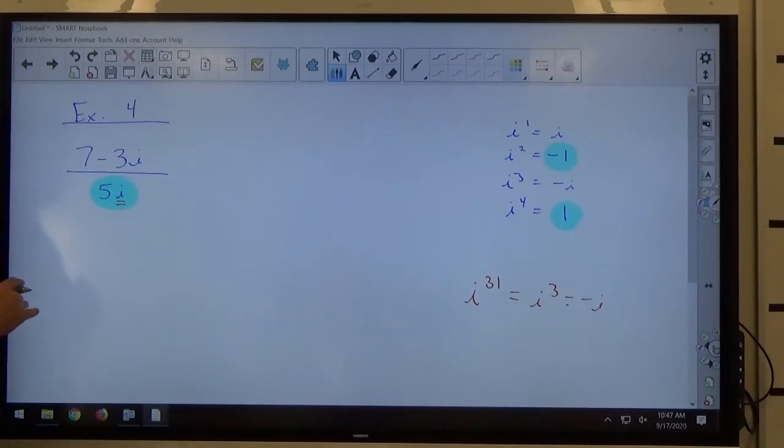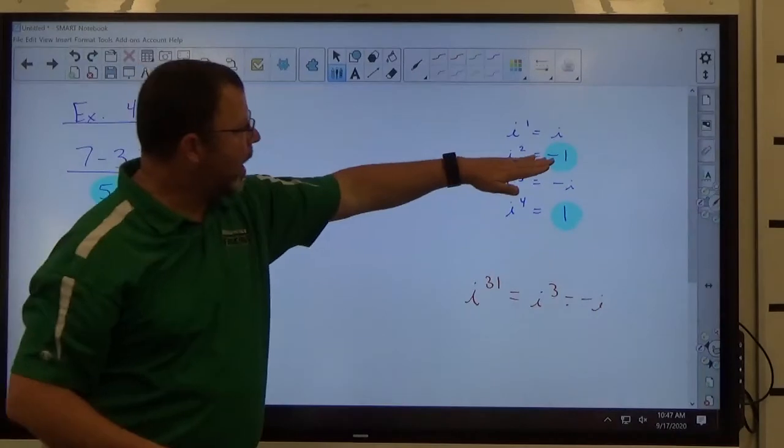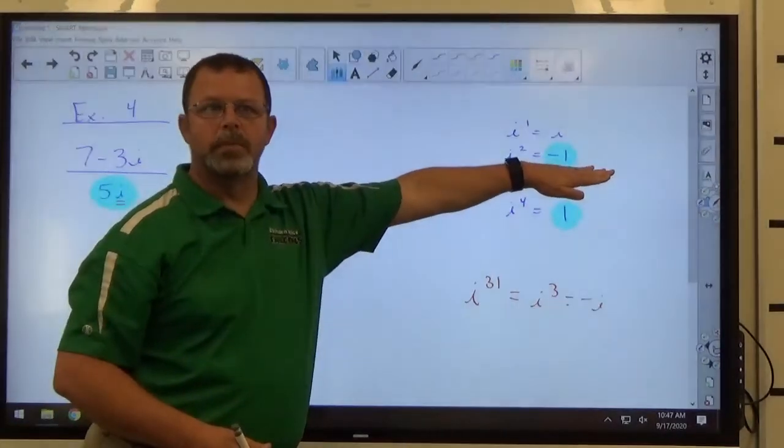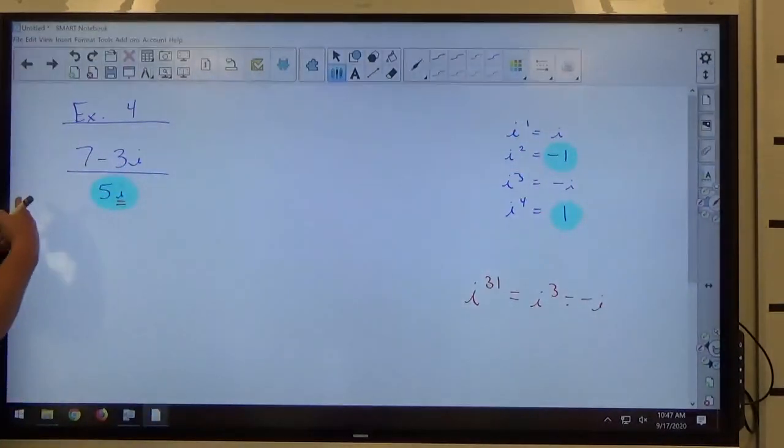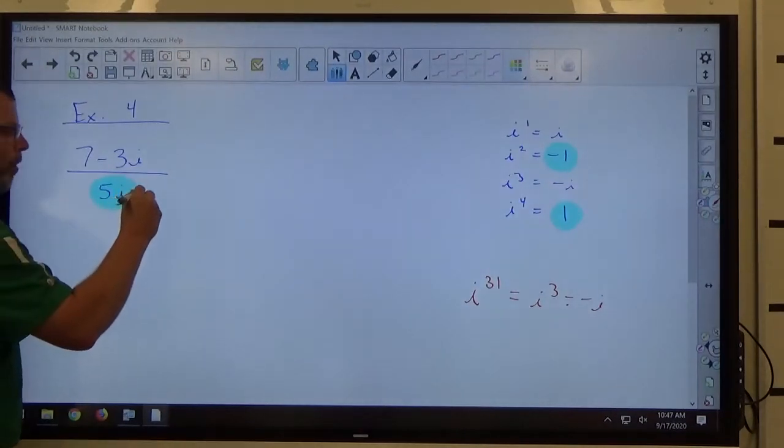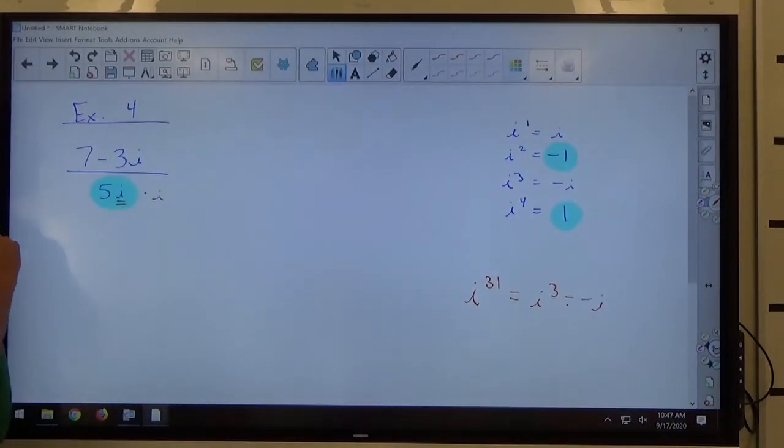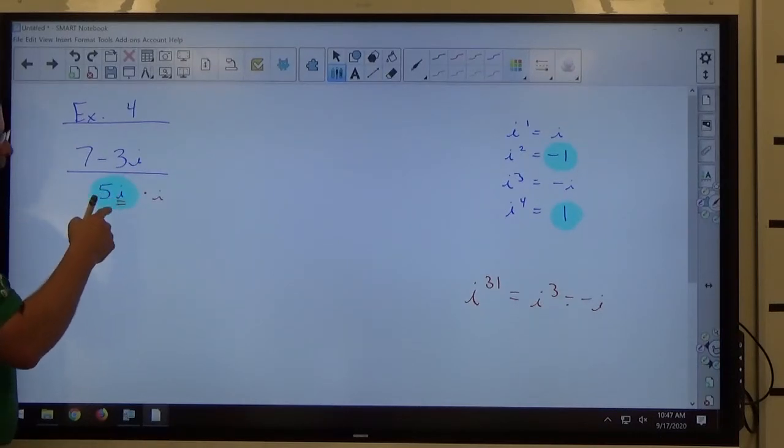I can't just make i into a real number because it is imaginary, so I need it to go away, and I know i squared is equal to a real number. So what I want to do is I want to change i into i squared, and I do that by multiplying by i.